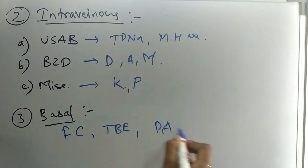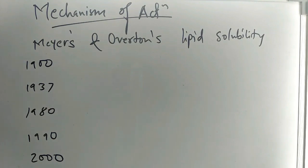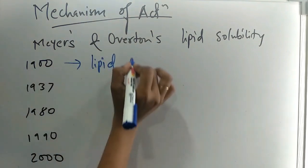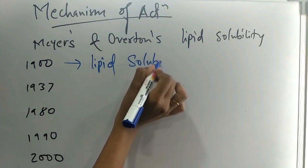The mechanism of action of general anesthetics is explained by Meyer's and Overton's lipid solubility. In 1900, it was seen that general anesthetics show lipid solubility.